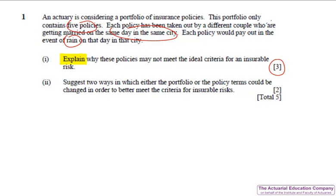In the second part, you're asked to suggest two ways that the portfolio or policy terms could be changed in order to better meet the criteria for insurable risks. And we simply have to undo the problems that we found in part one. Get more policies, ensure that they're on different days in different cities, and maybe change it from rain to something else.